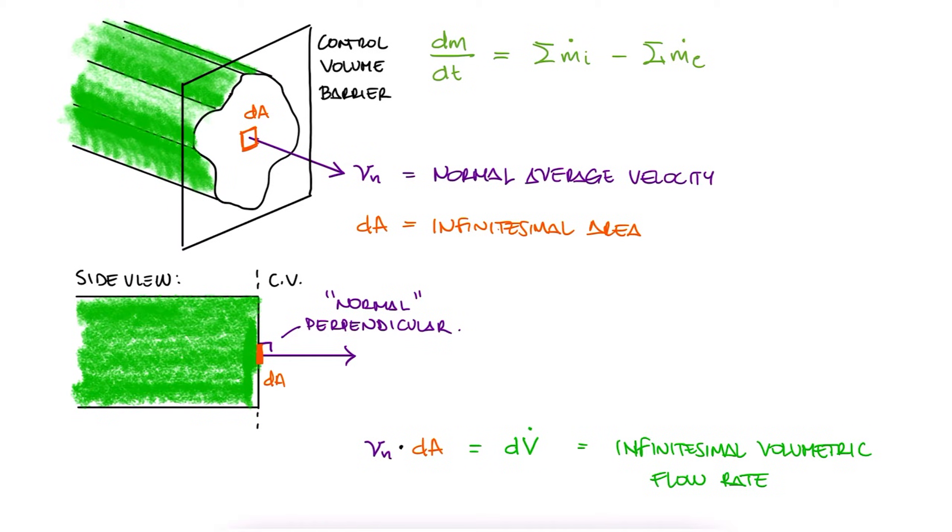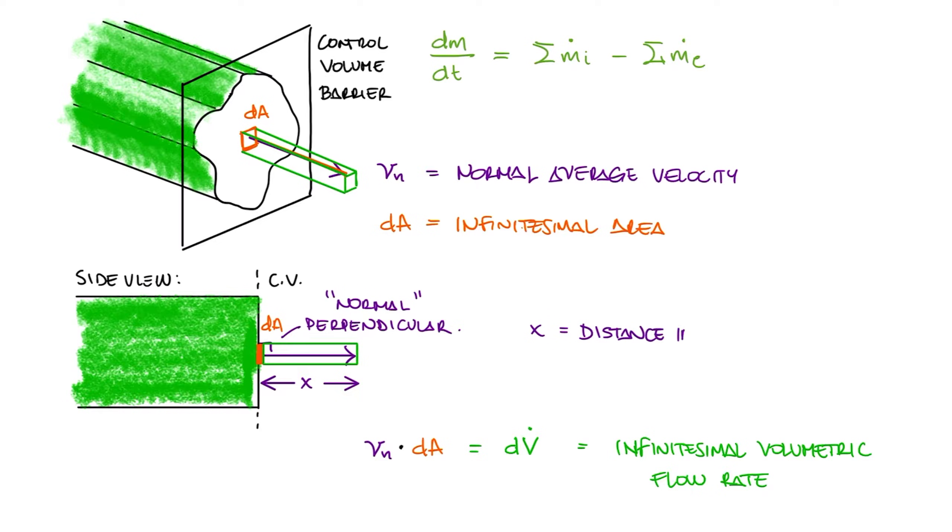You can think about this as waiting one second and seeing how much volume was let through, which would be equal to the distance a particle moved in one second times the area normal to it, basically the volume of a constant area solid. The velocity itself tells us how much that particle advanced in one second, so the velocity itself is the same as the length of the volume of fluid that was let through.